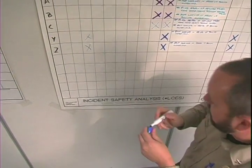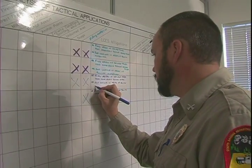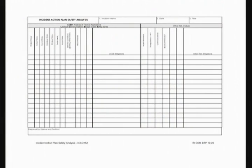The purpose of the ICS Form 215A, Incident Safety Analysis, is to identify and mitigate any safety issues identified in the planning meeting. This form is filled out by the incident safety officer. In box 1, list the incident name; box 2, the date; box 3, the time. The bottom of the form is used to identify safety risks and the mitigation for the identified risk.